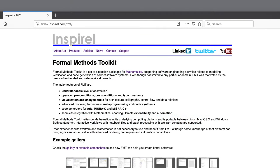For demonstration, I will use the formal methods toolkit, which is a set of Wolfram packages that you can download from the Inspiral website. And these packages implement the ideas that I would like to discuss. Okay, so this is an empty Mathematica notebook and I will start by loading the FMT package into the kernel.